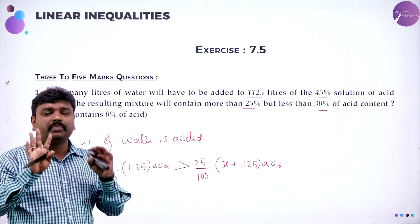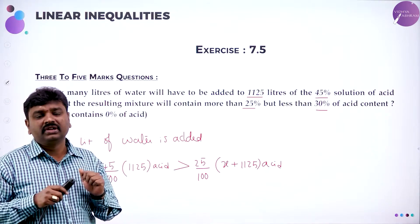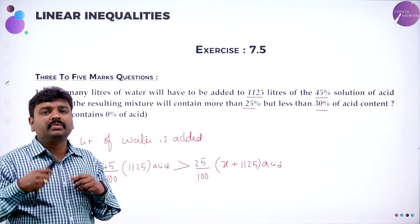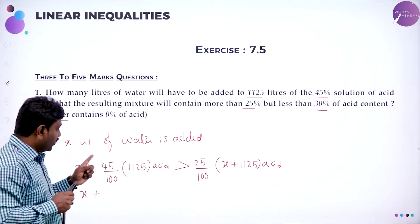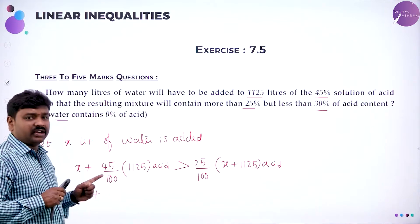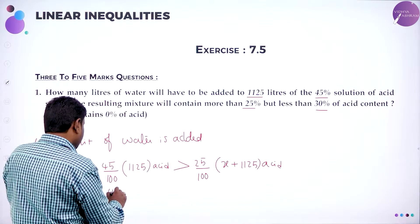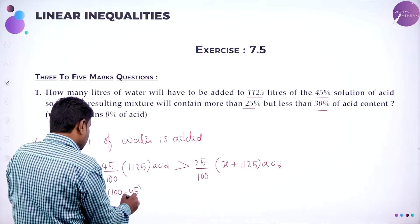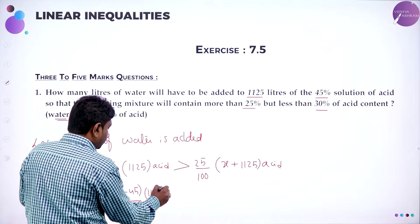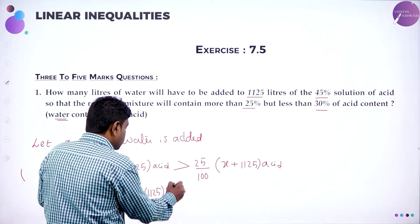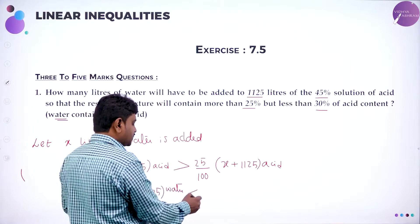Acid in terms of water: 45% acid means remaining is water. For example, in a class of 100 students, 45% girls means remaining are boys — 100 minus 45. Similarly, 45% acid means remaining is water. So water is 100 minus 45% of 1125. If acid should be more, water should be less — so greater becomes lesser.